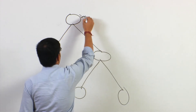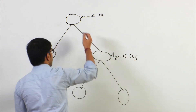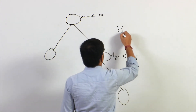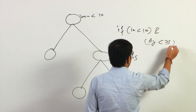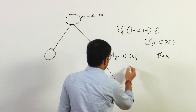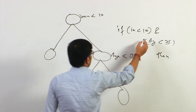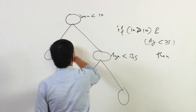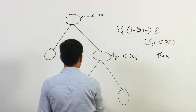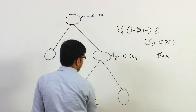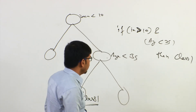For example, let's say income is less than 10 and age is less than 35. If income less than 10 and age less than 35, and the observation falls in that node which is class 1, then the classification rule is: if income < 10 AND age < 35, then class 1. These simplified classification rules can be derived from a tree model.